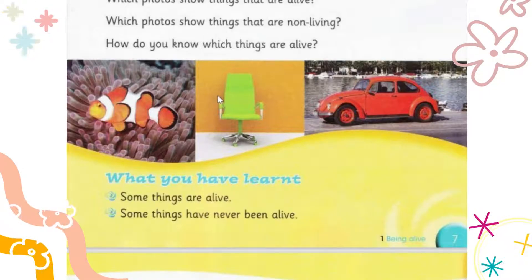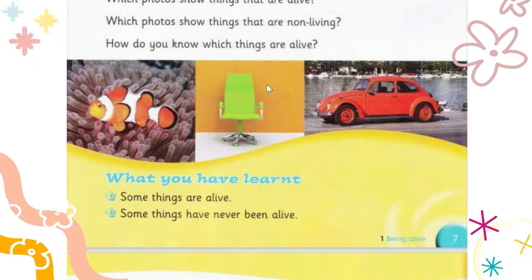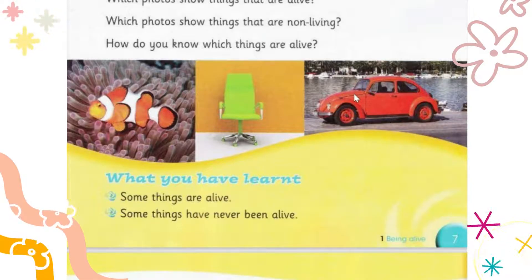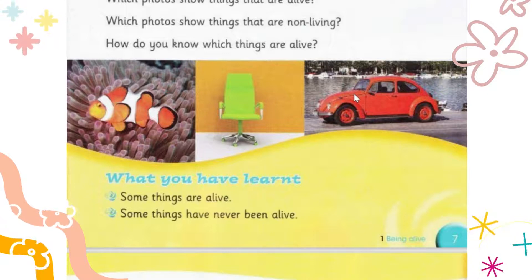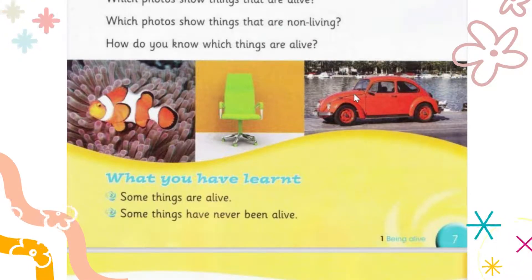Next, there is a chair — is it a living thing or non-living thing? Non-living thing, because the chair cannot walk, cannot move by itself, and doesn't have an oxygen supply — it doesn't breathe. The next example is a car — is it a living thing or non-living thing? This is a non-living thing because a car cannot move on its own or talk.